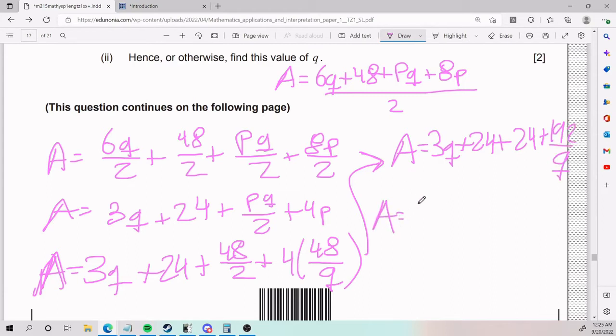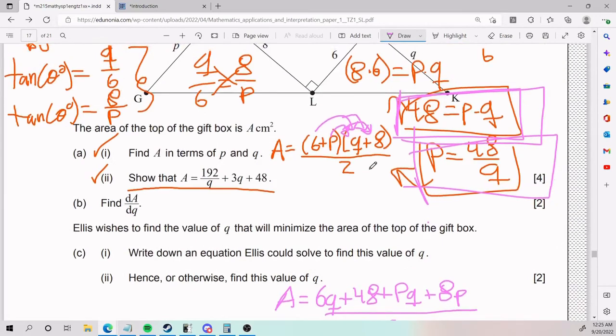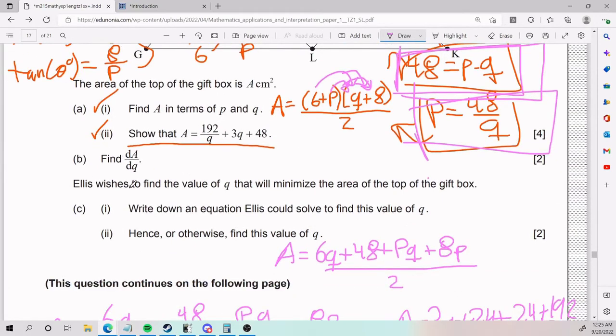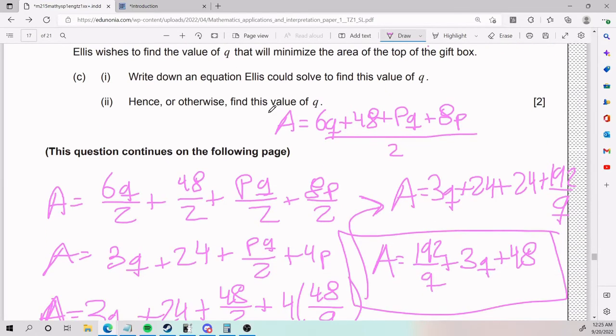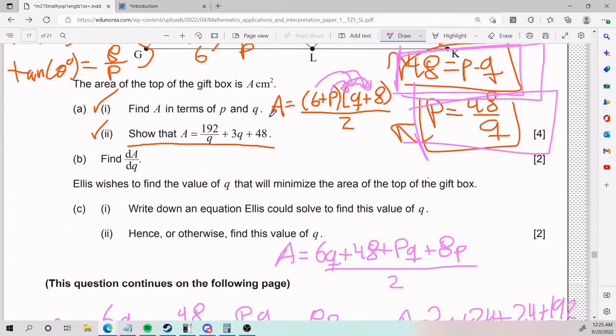So, A equals 192 divided by Q plus 3Q plus 48. If I organize my terms a little bit, I end up with that, which is the same as what we're trying to show. Now, I know that this part got a little bit messy. But, again, never lose sight of what you're trying to get. If these are only Q's, find a way to get P equals something, P equals something in terms of Q, so that you can plug in and end up with just Q.